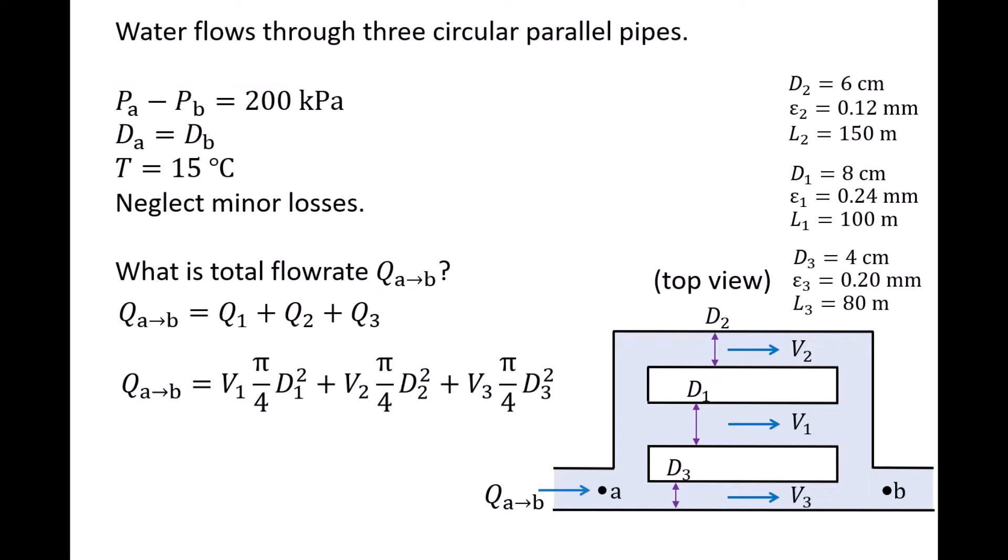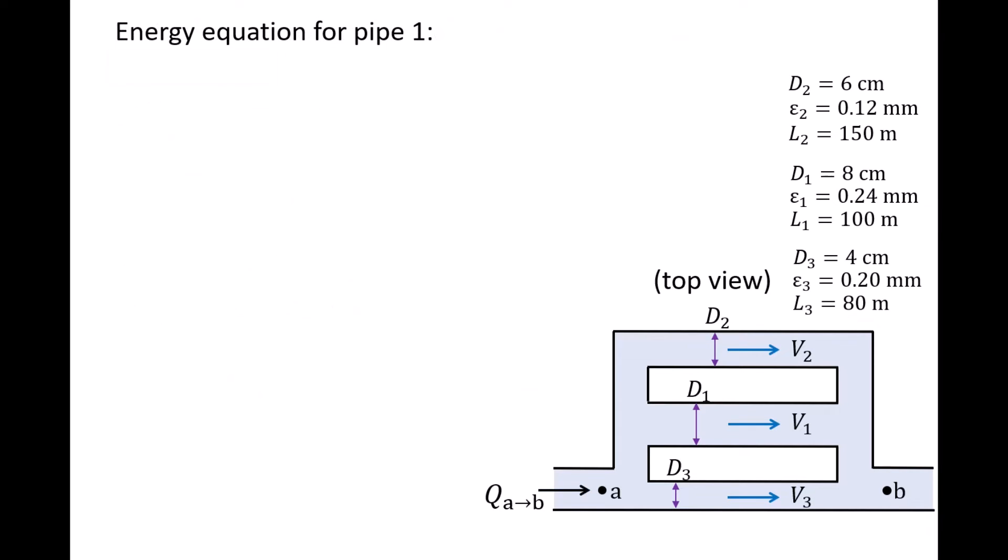At this point, we know the diameters but not the speeds, so we will need to use conservation of energy to help us find V1, V2, and V3. We will apply the conservation of energy equation for each pipe individually. First we draw a control volume for the flow that goes through pipe 1. The inlet is at point A and the outlet is at point B. The conservation of energy equation for this control volume is the pressure head plus velocity head plus elevation head at outlet B is equal to the pressure head plus velocity head plus elevation head at inlet A minus the head loss through pipe 1 plus the pump head minus the turbine head.